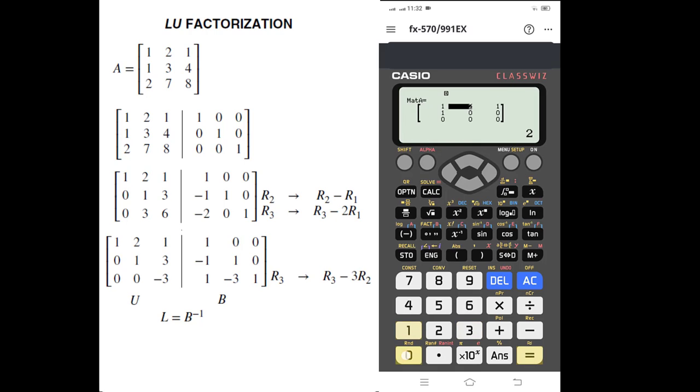Okay: 1, 0, 0, -1, 1, 0, and 1, -3, and 1. Option, matrix A, inverse. And this is our result: 1, 0, 0, 1, 1, 0, and 2, 3, 1, which is our lower triangular matrix.